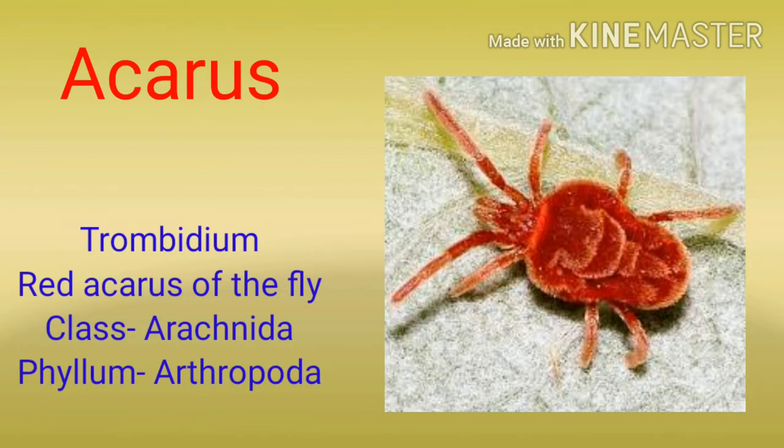Next, हम बात कर रहे हैं Acarus जिसमें आते हैं ticks और mites। इसमें Trombidium की बात चल रही है जो commonly called red acarus of the fly है, class Arachnida और phylum Arthropoda।